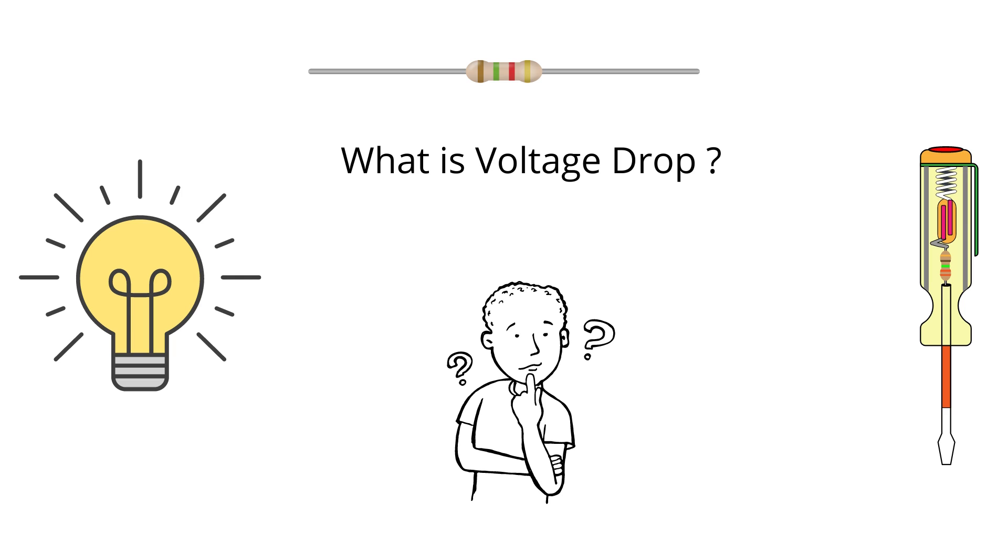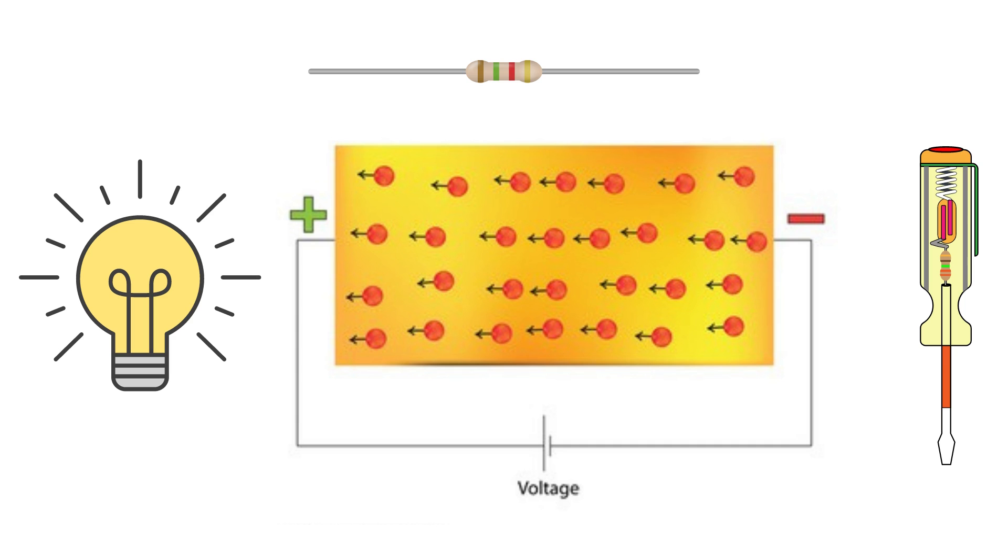Hey everyone, welcome to my channel Electric And. Today we will be learning about the concept of voltage drop and why it occurs in an electrical system. We already know about the basic concepts of voltage, current, and resistance and their relationship with each other.